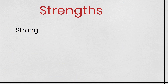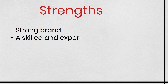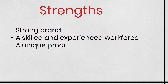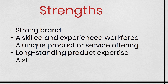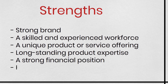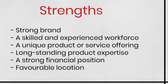Let's break each compartment down. The strengths of a business refer to the characteristics that give it an advantage over its competitors or help it achieve its objectives in a better and more efficient manner. They are mainly internal to the organization but can be external. Examples of strengths might include a strong brand, a skilled and experienced workforce, a unique product or service offering, long-standing product expertise, a strong financial position, or even a favorable location. Identifying these strengths helps organizations understand their internal capabilities and how they can be best leveraged against the opportunities, threats and weaknesses presented in the rest of the SWOT.